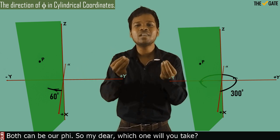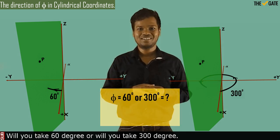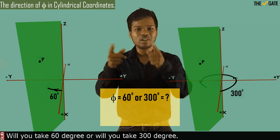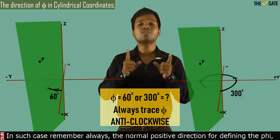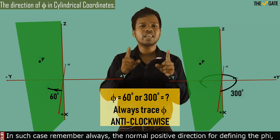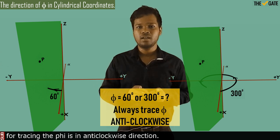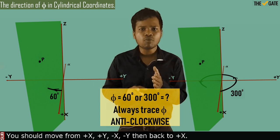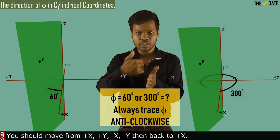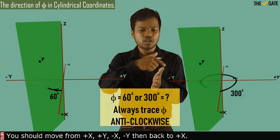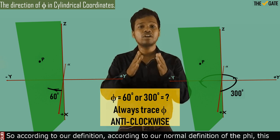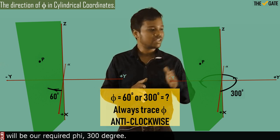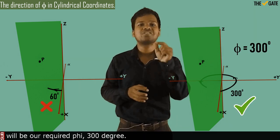So which one will you take? Will you take 60 degrees or will you take 300 degrees? In such a case, remember always: the normal positive direction for defining phi, for tracing phi, is in the anticlockwise direction. You should move from plus x, plus y, minus x, minus y, then back to plus x. According to our normal definition of phi, this will be our required phi: 300 degrees.